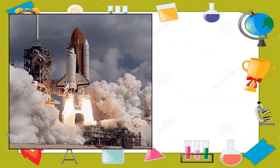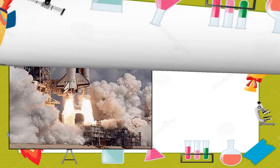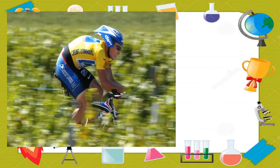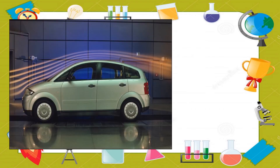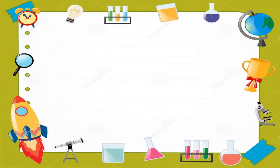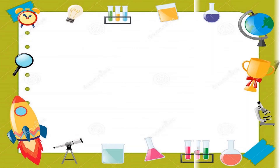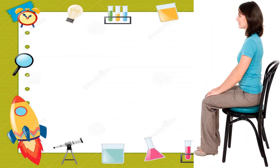Number 1: a spacecraft about to launch in space. Number 2: a boy joining a bicycle competition. Number 3: a car in a parking lot. Number 4: a girl jumping on a trampoline. Number 5: a lady sitting on a chair.